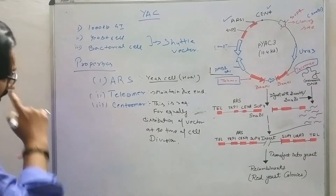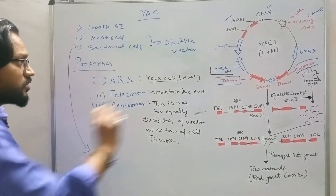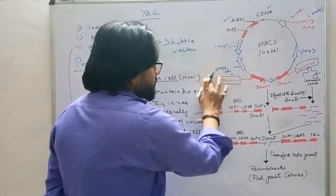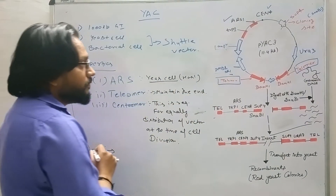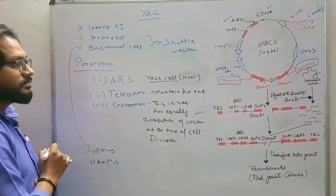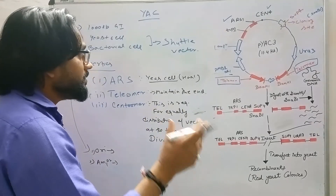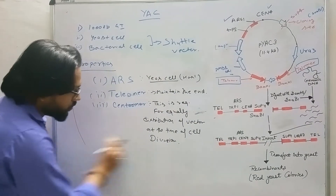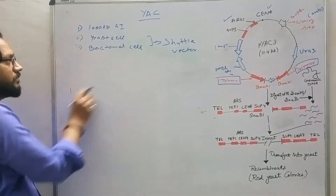These are the important properties. As mentioned, this vector is also replicated in a bacterial cell. So for the bacterial cell, we need an origin of replication — an ORI site. We also need an ampicillin-resistant gene that can be used as a marker. It is called a shuttle vector because it can multiply in both the yeast cell and the bacterial cell. Now we'll go into more detail about how it works.